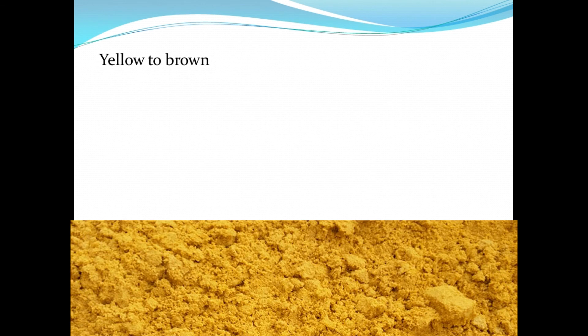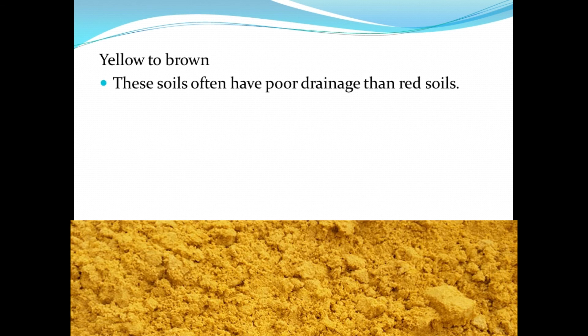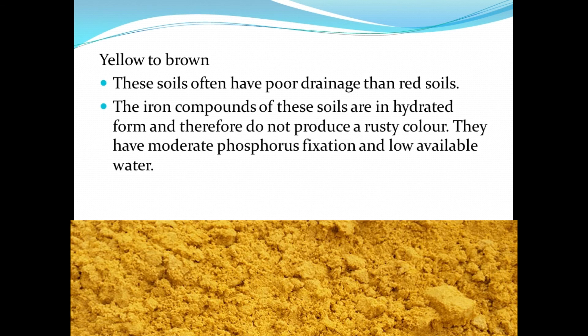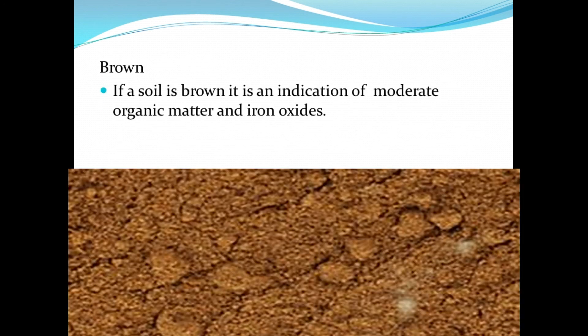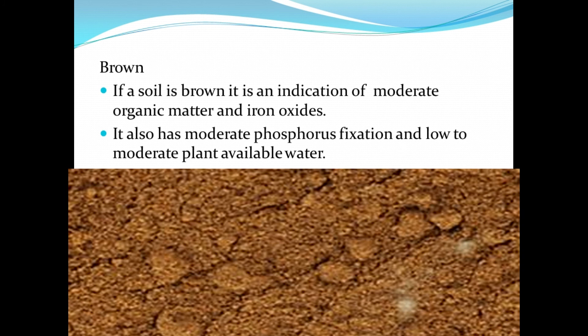Now let's take a look at yellow to brown soil colors. These soils often have poorer drainage than red soils. The iron compounds in these soils are in a hydrated form and therefore do not produce a rust color. They have moderate phosphorus fixation and low available water. A brown soil color indicates moderate organic matter and iron oxides, moderate phosphorus fixation, and low to moderate plant available water.